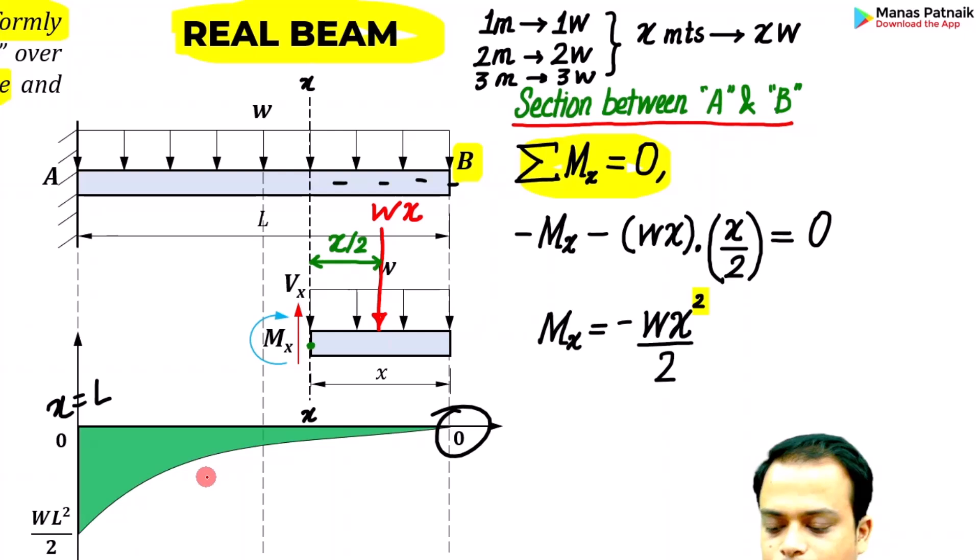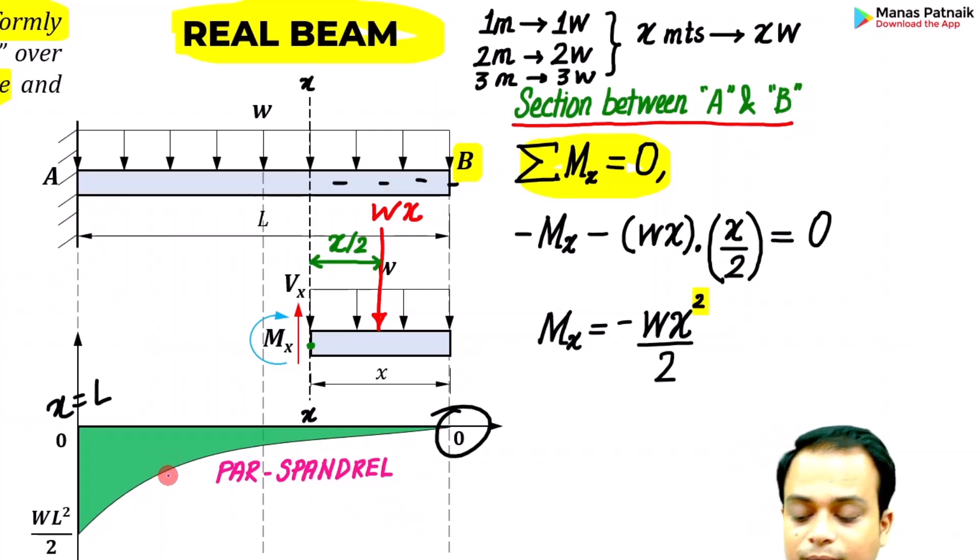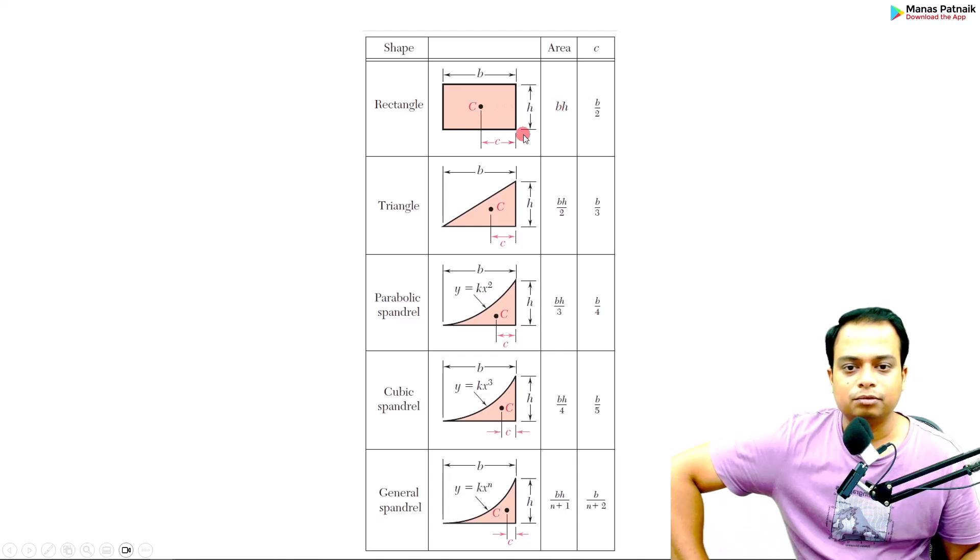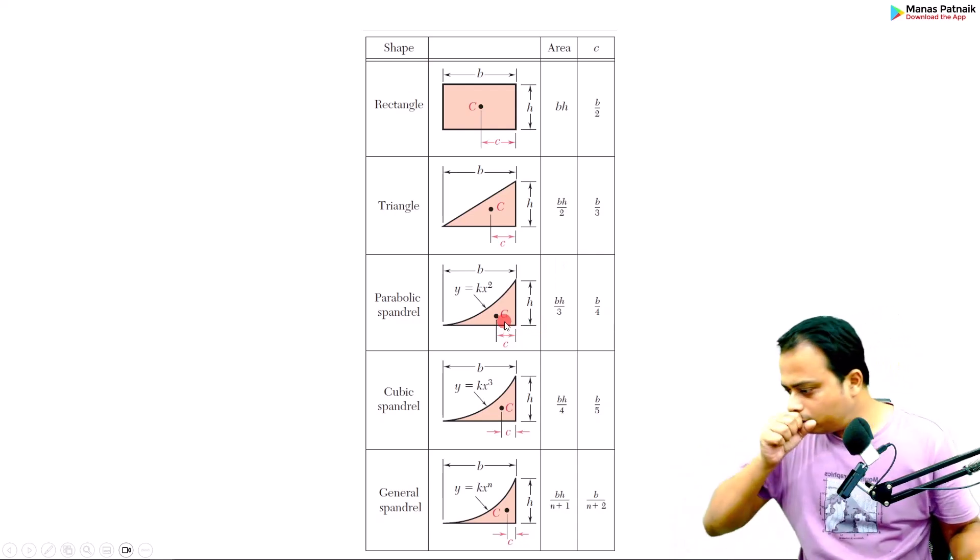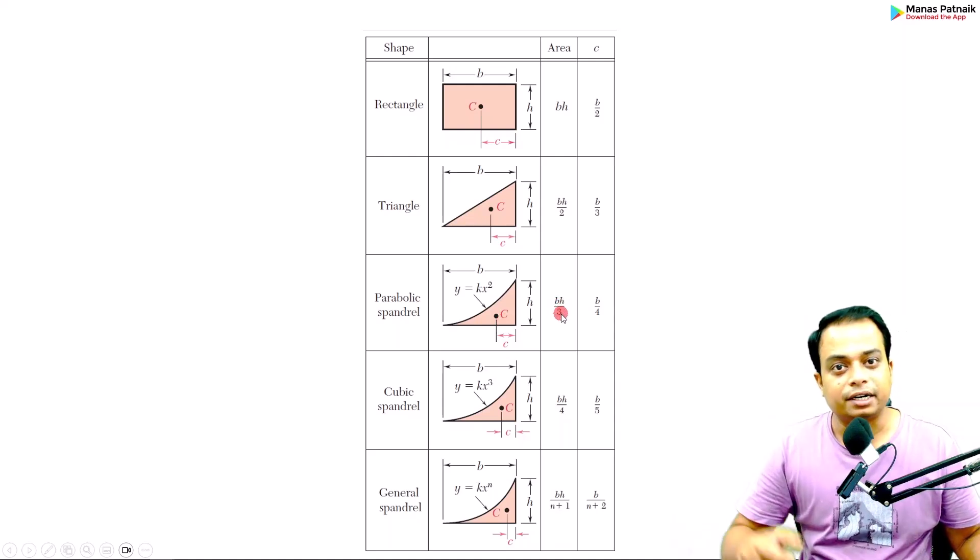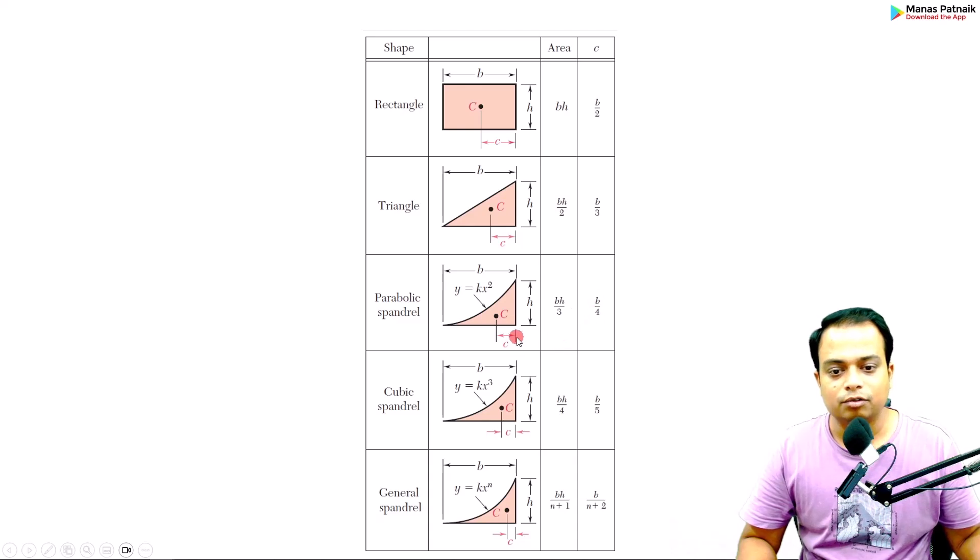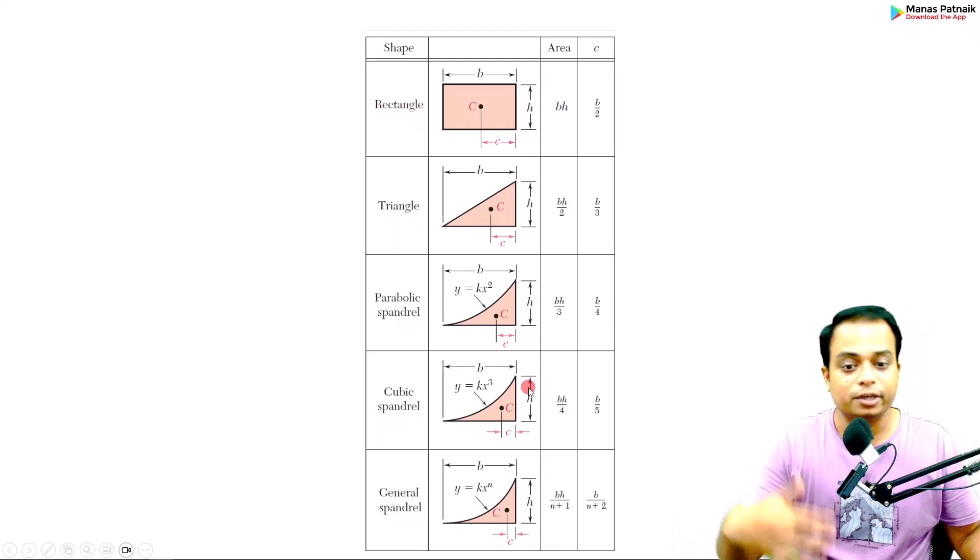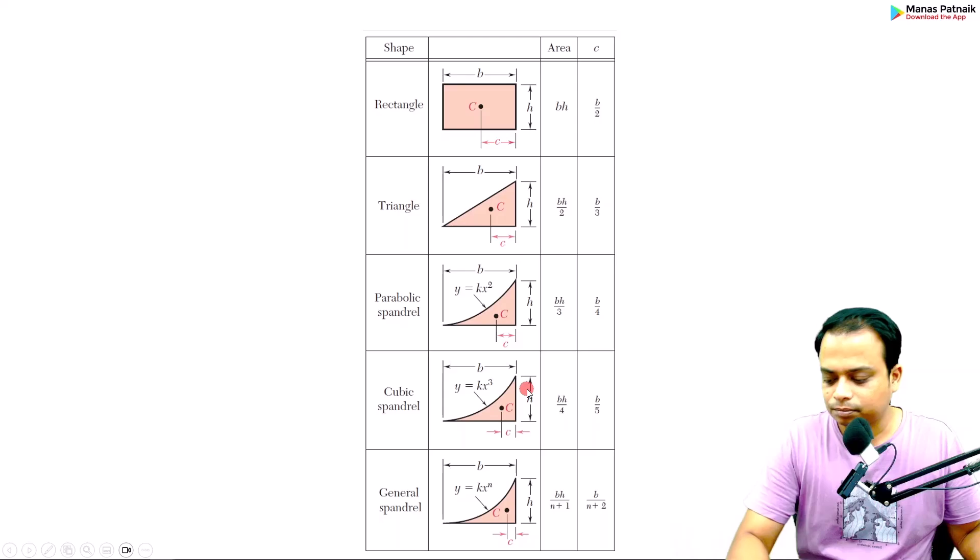This over here is what is known as a parabolic spandrel. How the centroid of such a figure is calculated? You need to know the equivalent point load and where it would be acting. For a rectangle: area is bh, centroid at b by 2. Triangle: bh by 2, half base into height, centroid is b by 3 from the right angle. For a parabolic spandrel, I want all of you to remember: area is bh over 3, and location of centroid is at a distance of b by 4 from this 90-degree corner. Whenever you are dealing with triangularly varying loads, this cubic spandrel will come into the picture.